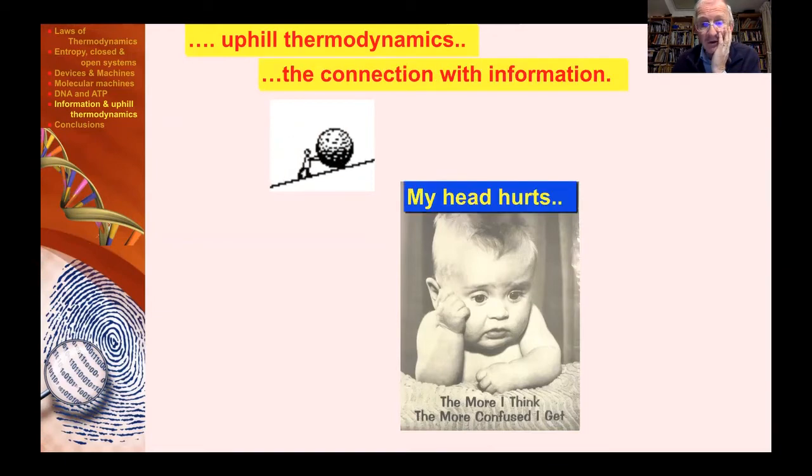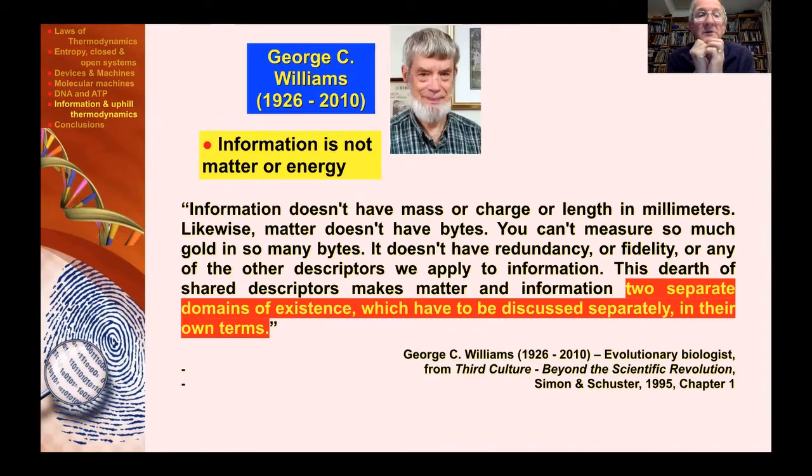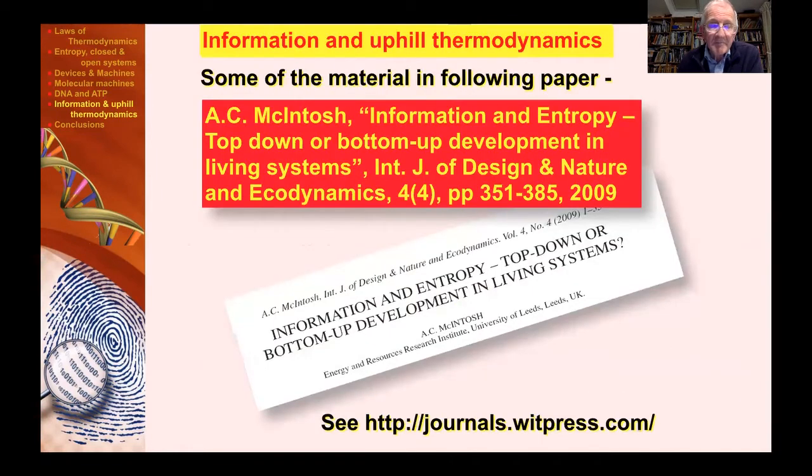The connection then with information. Information, George Williams has said, doesn't have mass or charge. It doesn't have length in millimeters. Information is not the same as matter or energy. In information terms, you talk about bits and bytes. But matter and energy don't have those sorts of units. In fact, the two systems are rather different. And yet both are real. Matter and energy is real, but so is information. We need to realize this. No progress can be made, he is saying here, without recognizing this.